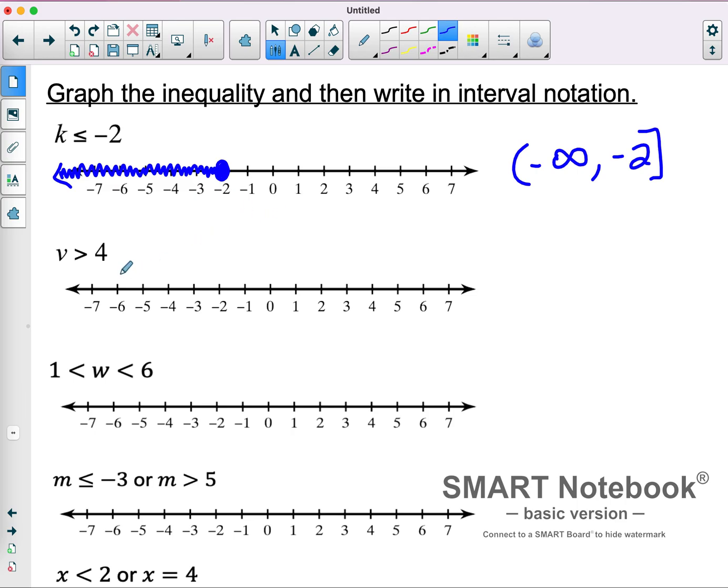V is greater than 4. I'm going to find the 4 and put a circle. This is going to stay open, because it doesn't include 4. It doesn't say or equal to, it's just strictly greater than 4. All the values greater than 4 are going to be to the right of 4.